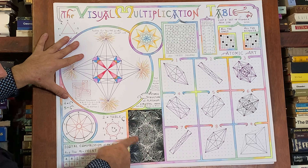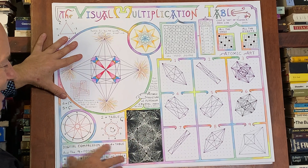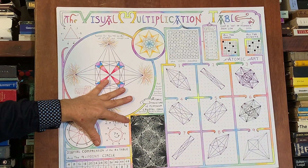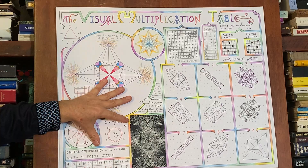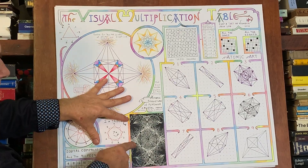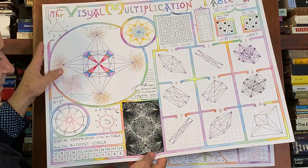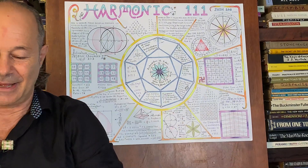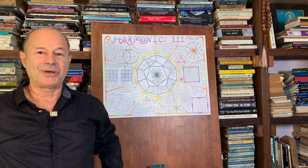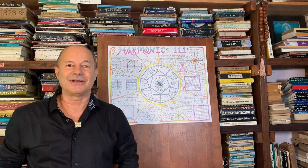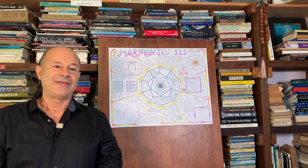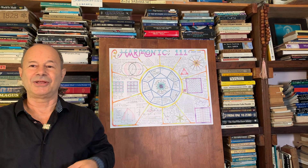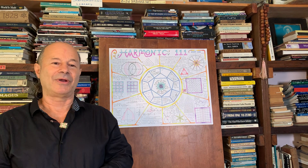This mandala happens to be the atomic structure of platinum crystals — the first photograph of an atom ever taken, in the 1950s, by Professor Erwin Müller. We end up with the atomic structure of a crystal. That's what led me on my journey, recognizing that sacred geometry reveals all these awakening codes of 111.